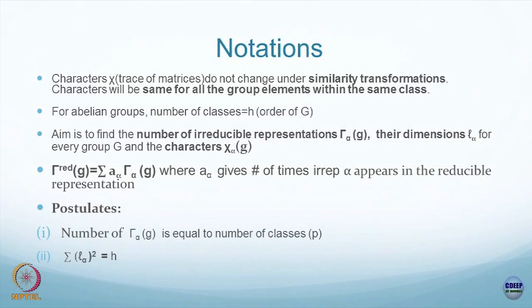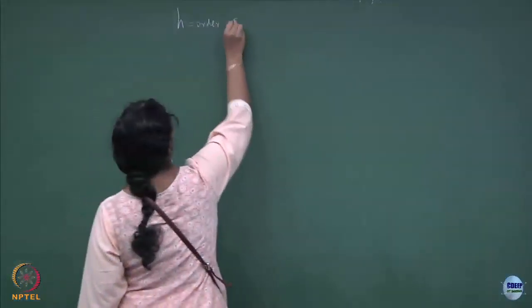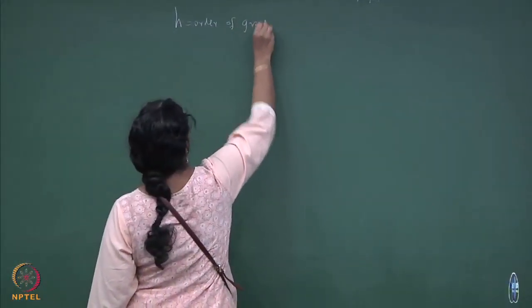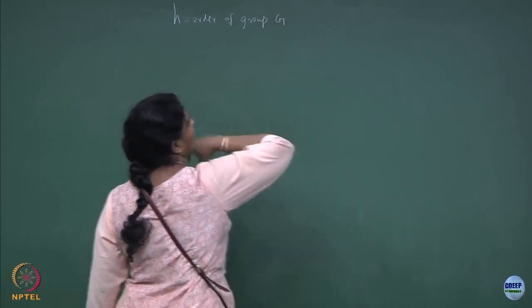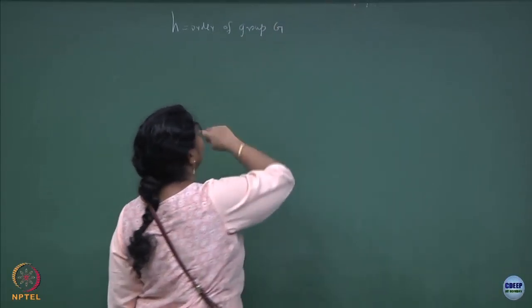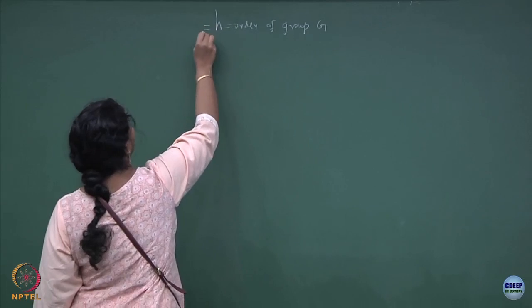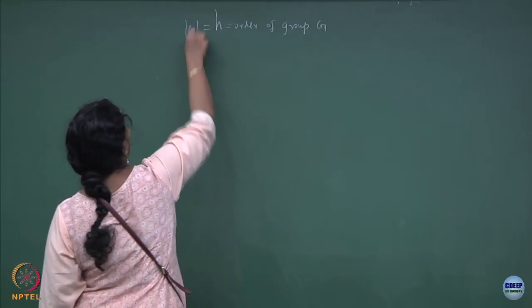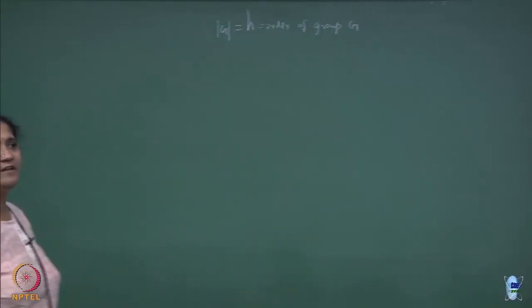Let me begin with the notations which we started yesterday. We are going to take H as the notation for order of group. Typically we write order of group G by the notation |G|, which we would have written as mod G, but we are writing this as H.